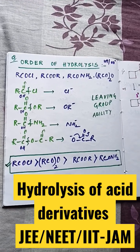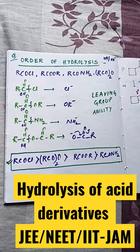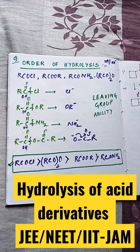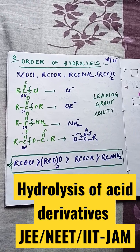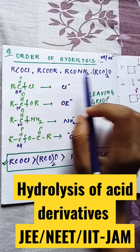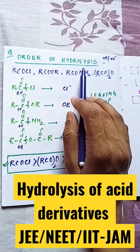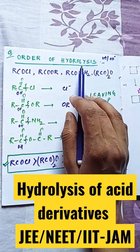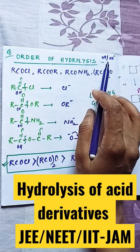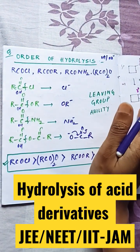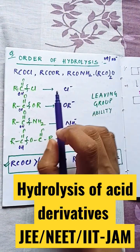This question is from organic chemistry — a very important question for JEE — on the order of hydrolysis. Hydrolysis can happen in both acid and basic conditions.